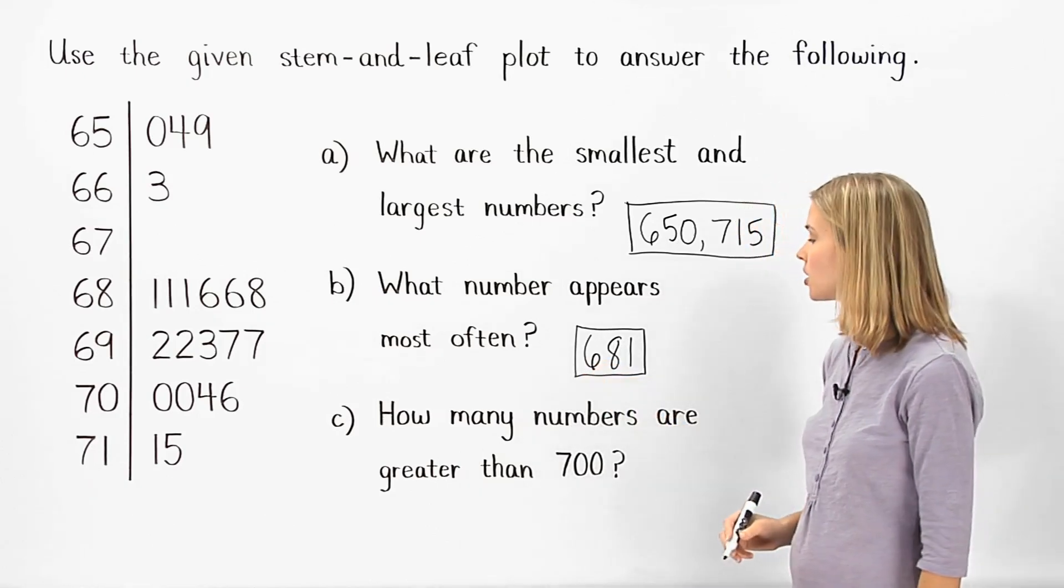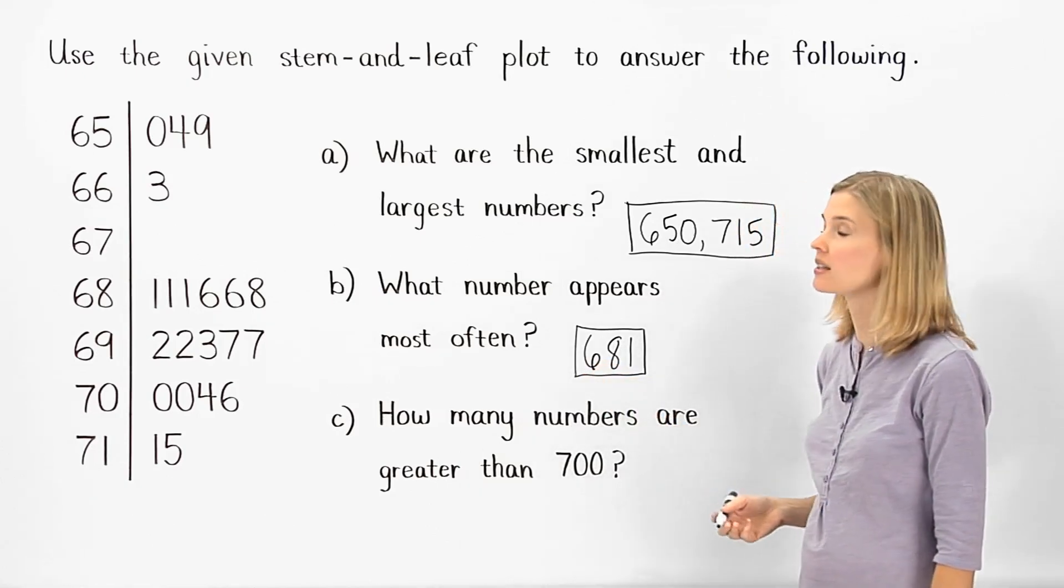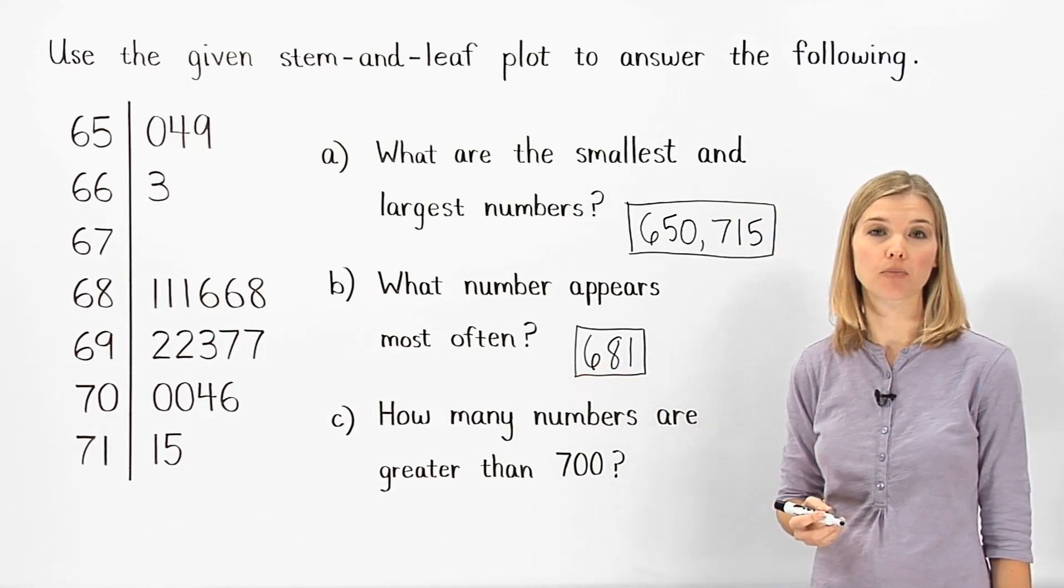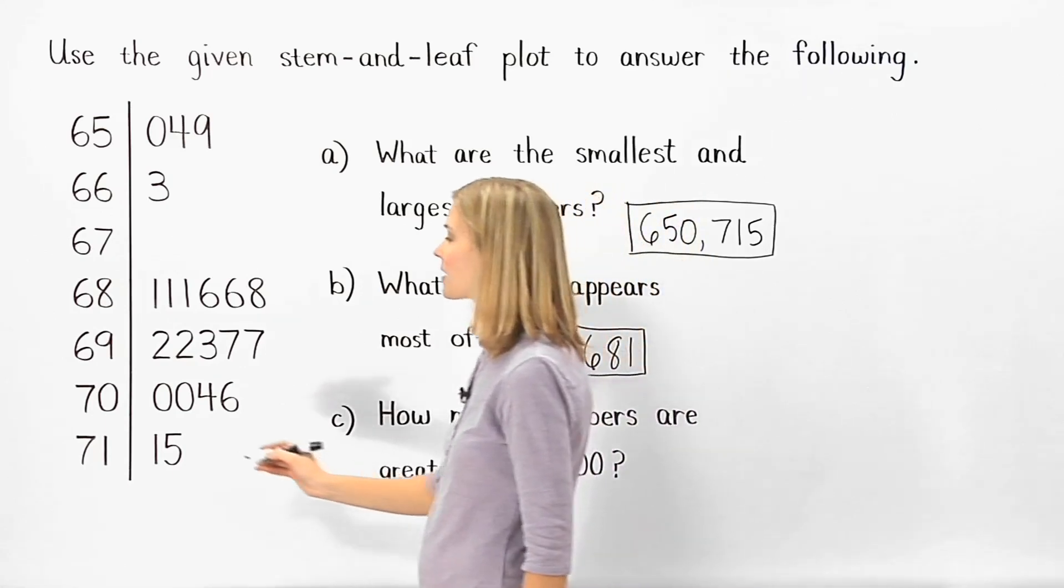In part C, to determine how many numbers are greater than 700, we first locate 700 in the stem and leaf plot, which is in the second-to-last row.